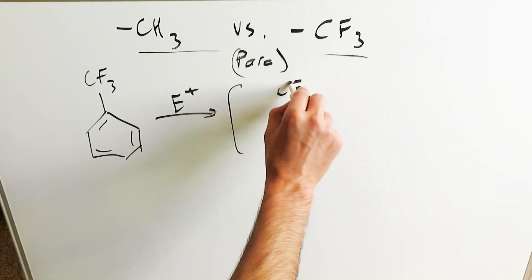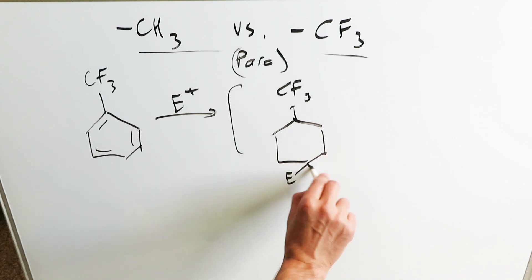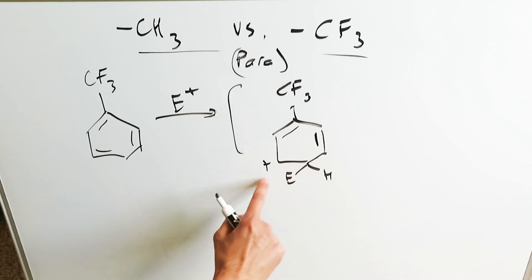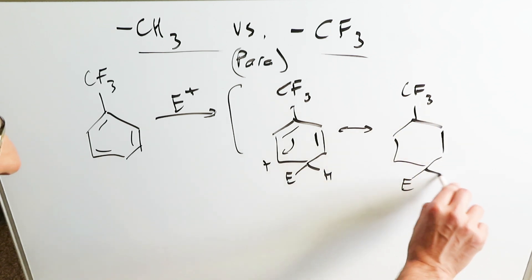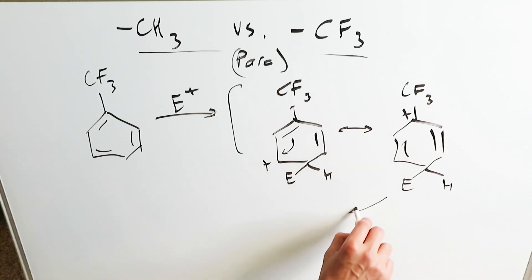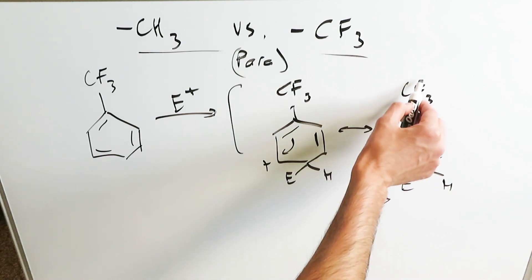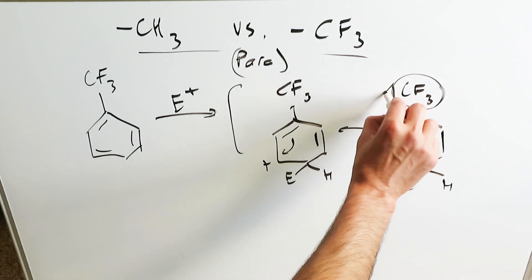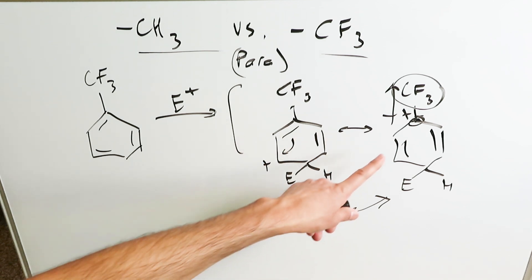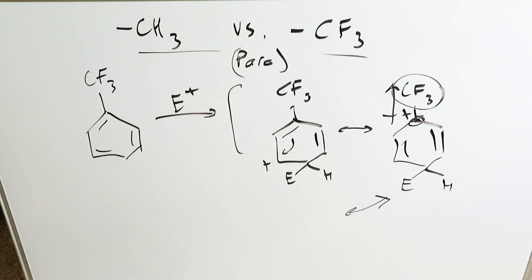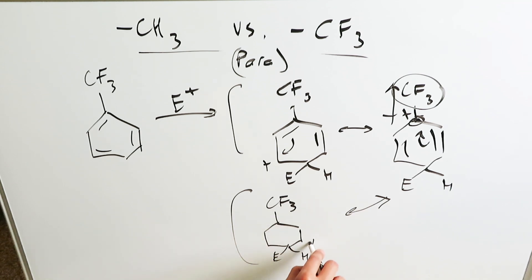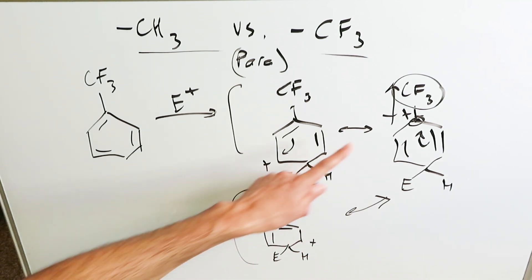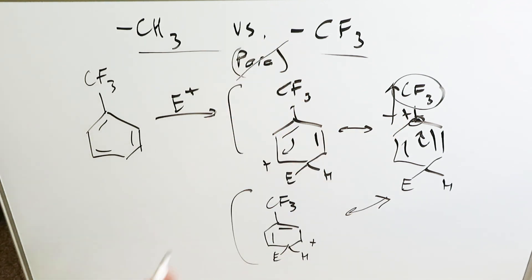The first resonance structure for the para attack: the electrophile is placed in the para position, with a positive charge developing, then electron shuffling occurs. In the next resonance structure, the positive charge has ended up right where the CF3 group is — in the worst possible position. My positive charge has ended up in the area of the extremely electron withdrawing group, further destabilizing that charge deficiency — it's unstable. From the three structures, this is the least stable, and in general the entirety is unstable. Para direction is not going to happen here because the resonance structures are not favorable — the charge deficiency ends up right next to the electron withdrawing group.